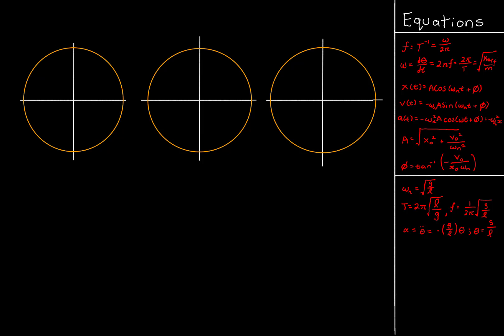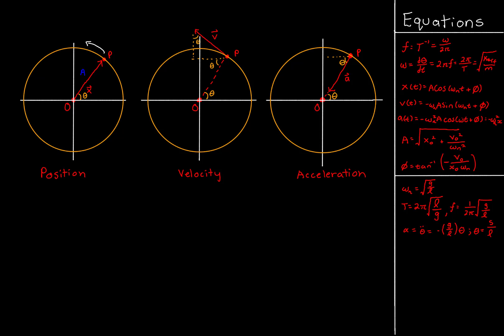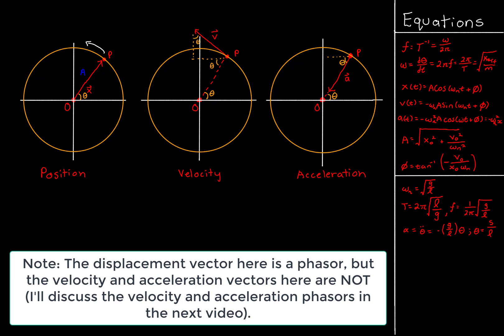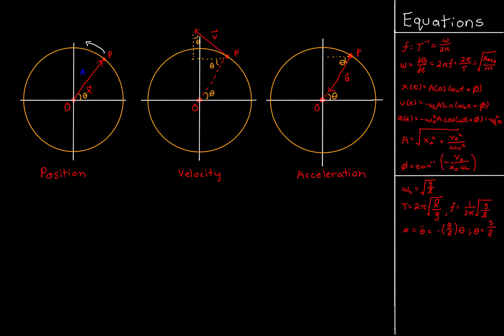I've defined position, velocity, and acceleration uniform circular graphs, each with their own phasor. We already defined the position phasor x at point P with phase theta, and we know r equals A, moving counterclockwise. For the velocity at point P, in translational mechanics the velocity always acts tangentially to the circle — so V acts tangentially. The angle theta at the bottom of the position circle, by the Z-rule, is also present in the velocity diagram.